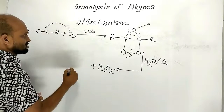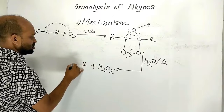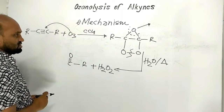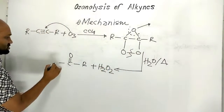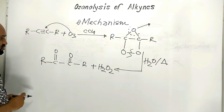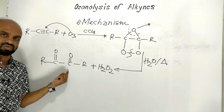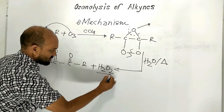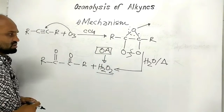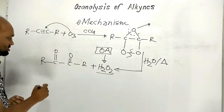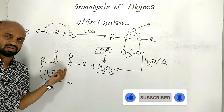After bond breaking, the compound becomes two alkyl-carbon-oxygen units connected by a single bond — this is an acid anhydride or diketone intermediate. Hydrogen peroxide is also formed, which acts as an oxidizing agent. This oxidizing agent then oxidizes the acid anhydride or diketone intermediate.